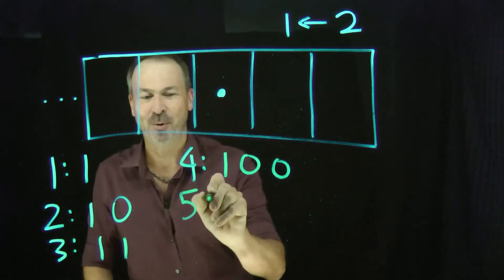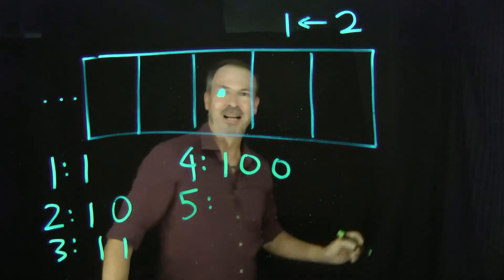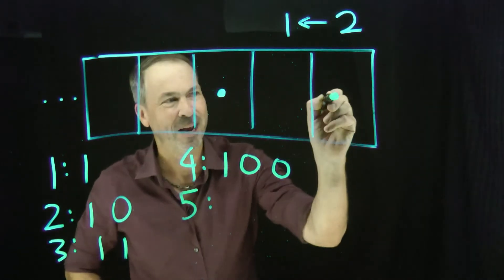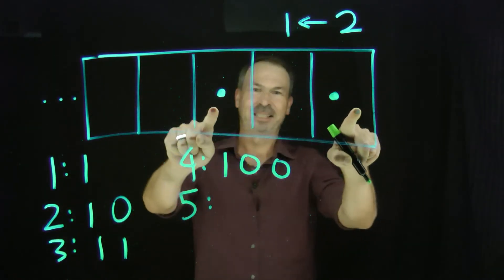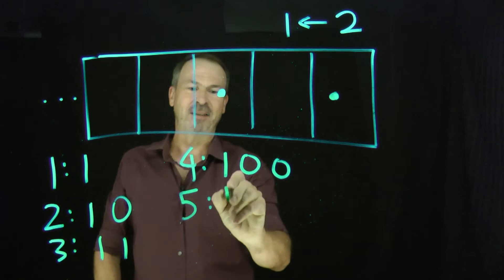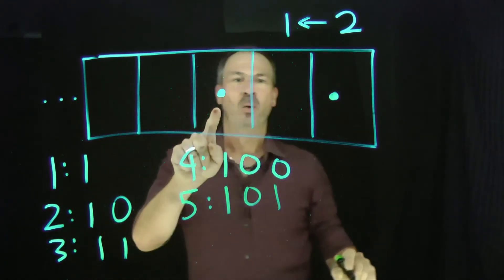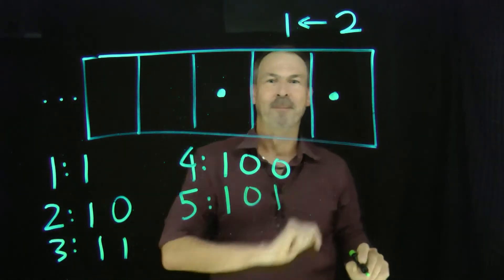Five — put in a fifth dot. I bet we can see what it's going to be. Always the rightmost box. And I see the code for five: it's one dot, zero dot, one. One zero one.